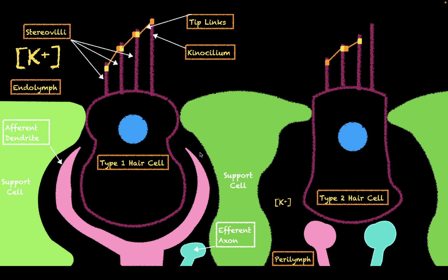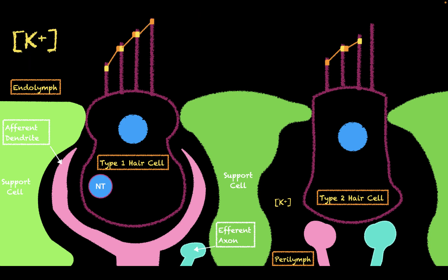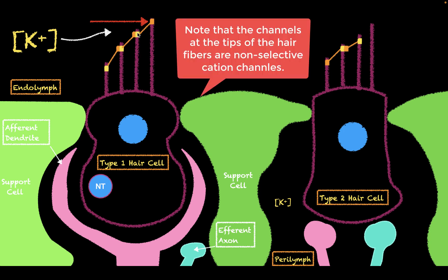So how do these hair cells actually generate a signal? Imagine we have our two hair cells and we basically move our head to a certain position. When we move our head, this causes the endolymph to move in a certain direction, which causes the stereovilli to move toward the kinocilium in both hair cells. When the stereovilli move towards the kinocilium, this causes the opening of the channels at the tips of these hair fibers, which allows potassium to move into the cell.